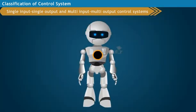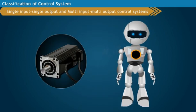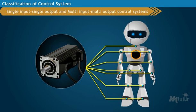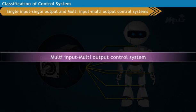But in case of a robot, several motors are there to operate different parts of it. Each motor needs to be energized separately. Hence, it is called the multi-input multi-output control system.